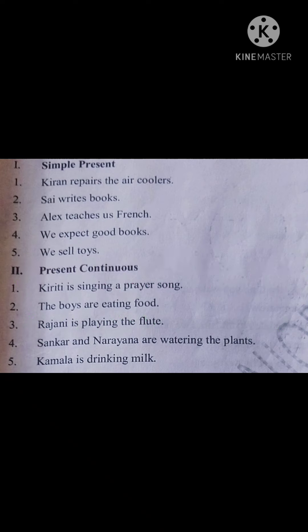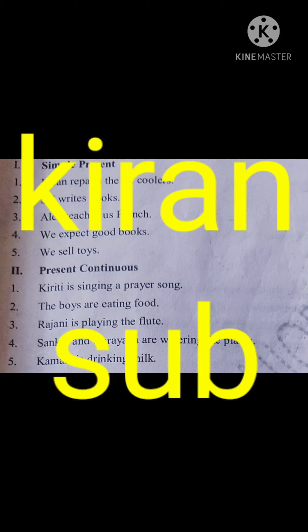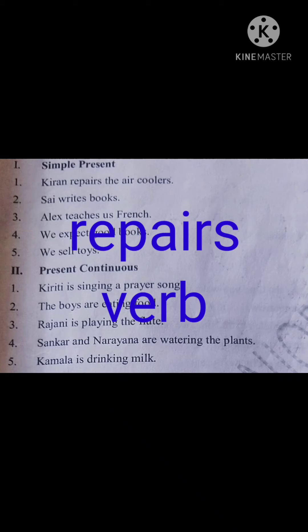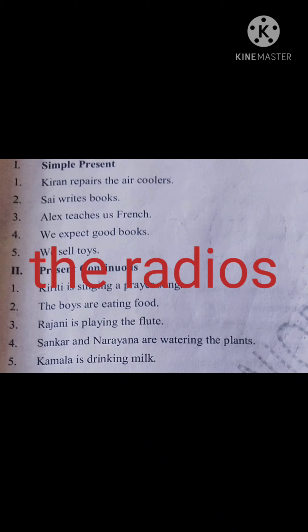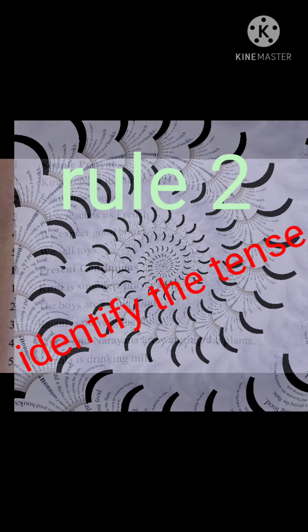The first rule is identifying the subject, verb, and object. We should identify which is the subject, which is the verb, and which is the object within the sentence. Here, 'Kiran' is the subject, 'repairs' is the verb, and 'the radios' is the object. The second rule is to identify the tense of the sentence.